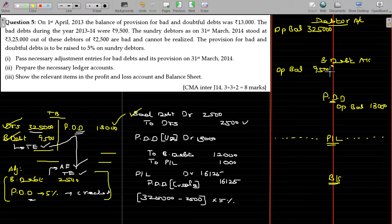Bad debt. In bad debt, to debtors, to debtors. This value being 2,500. In debtors, by bad debt, by bad debt, the value being 2,500.